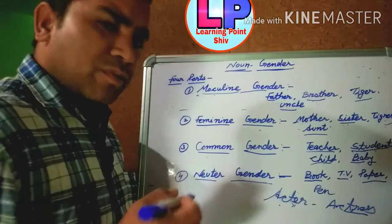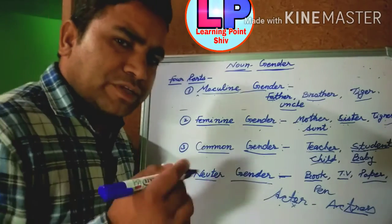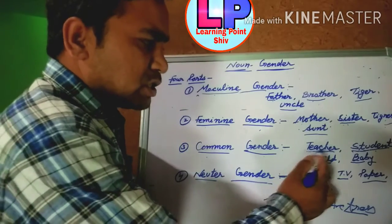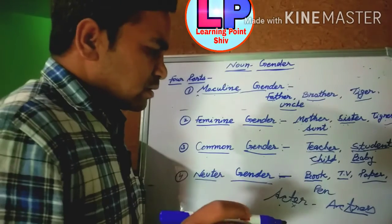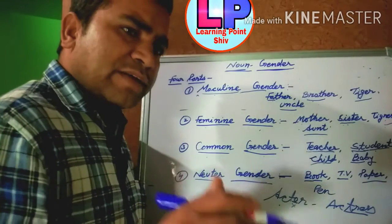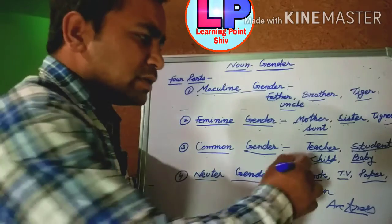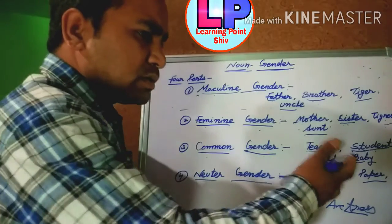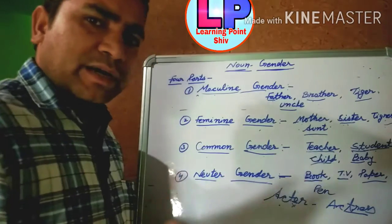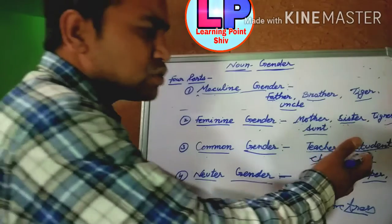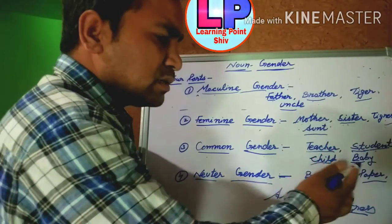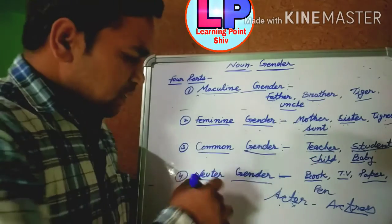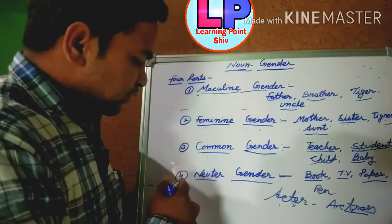Third is common gender. Common gender is such a gender that applies to both male or female. For example, we can say 'teacher' — whether male or female. Similarly, whether boy or girl, that's why we can say 'student.'